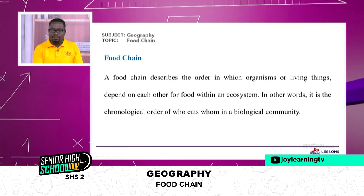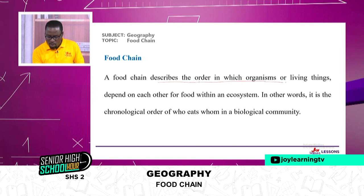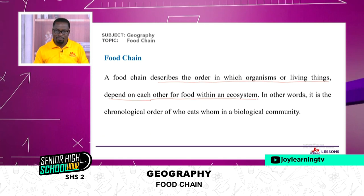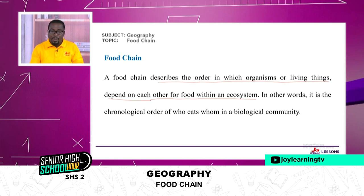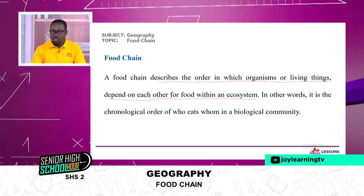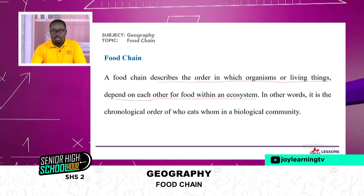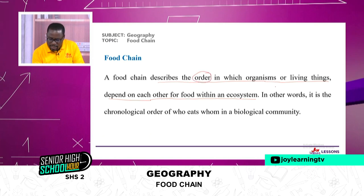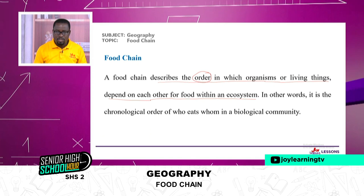Food chain — what is a food chain? A food chain describes the order in which organisms or living things depend on each other for food within an ecosystem. Talking of ecosystem: living and unliving things in a particular environment and the relationship that exists between them. Talking of food chain, we are talking of the order — this word is very, very important — in which organisms or living things depend on each other for food in their environment.